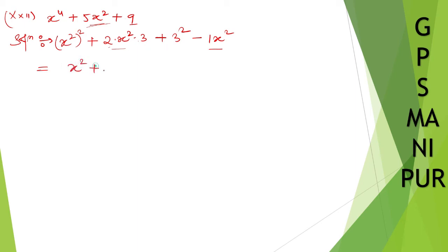Now a square minus b square, I can write down as a square plus 3, a plus b, a minus b.